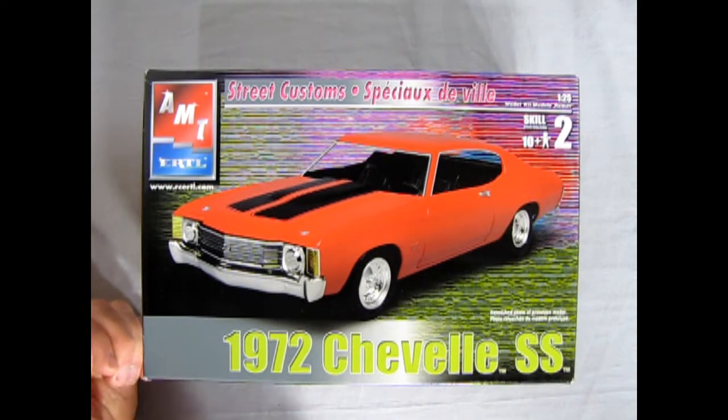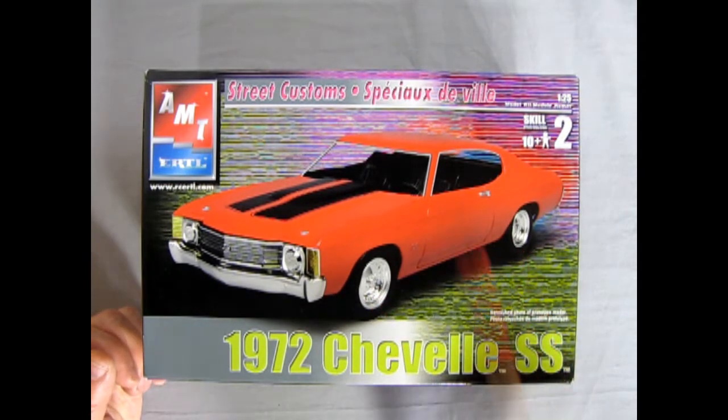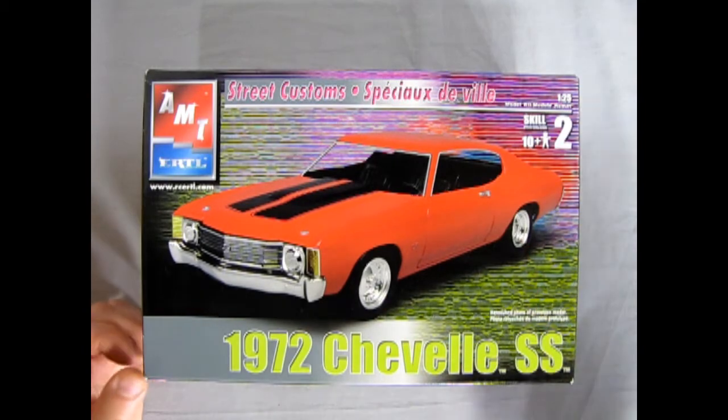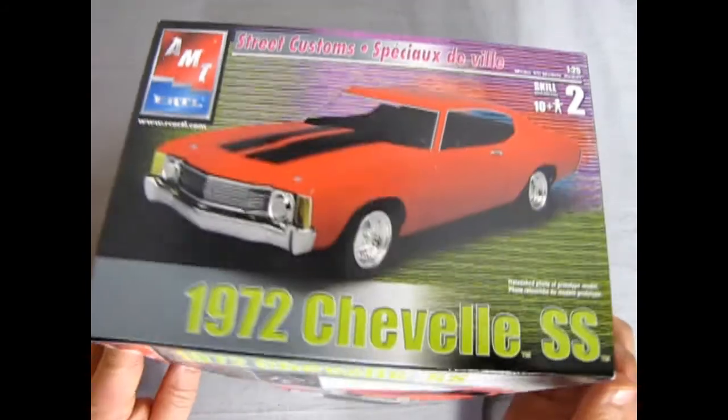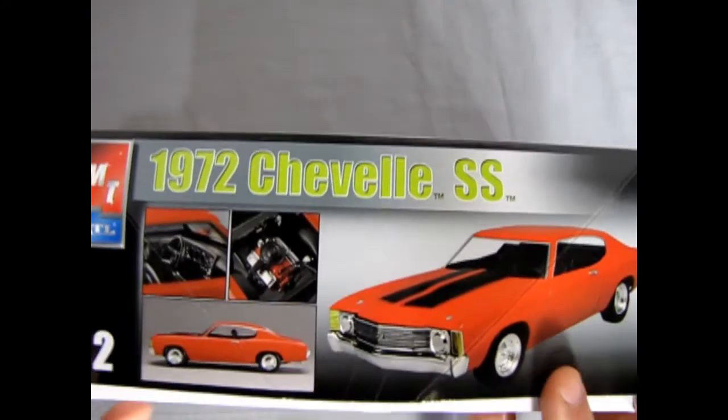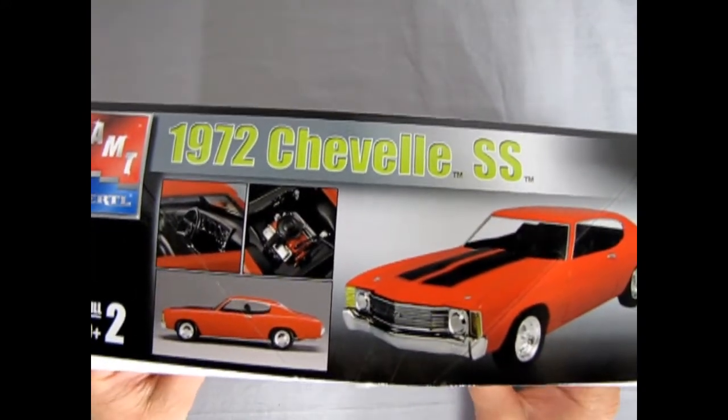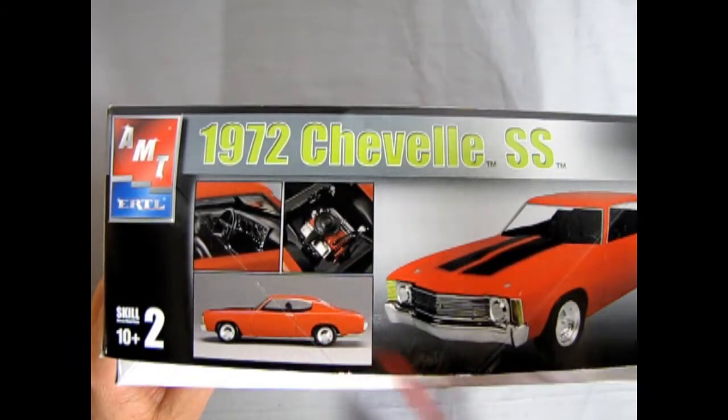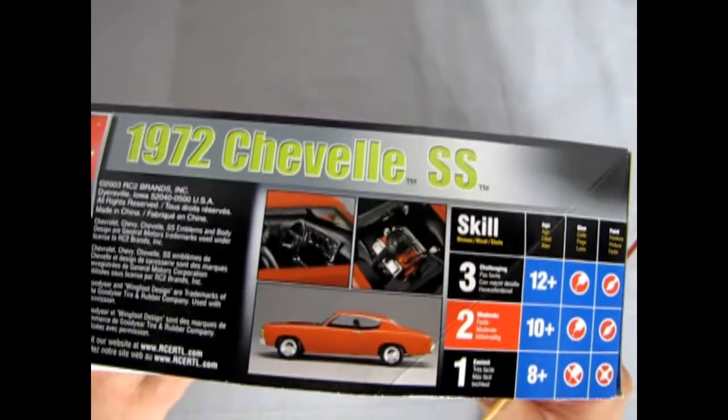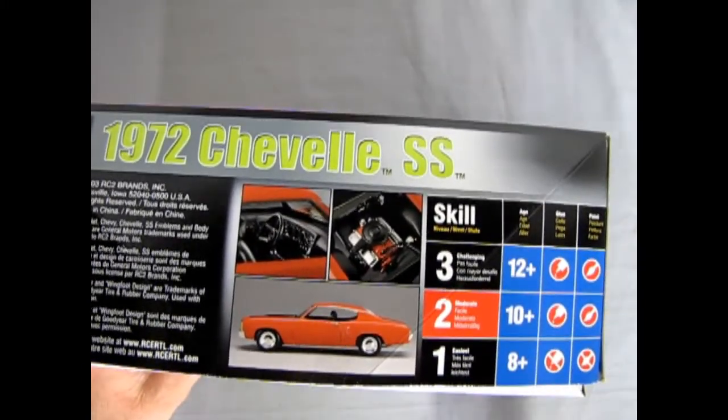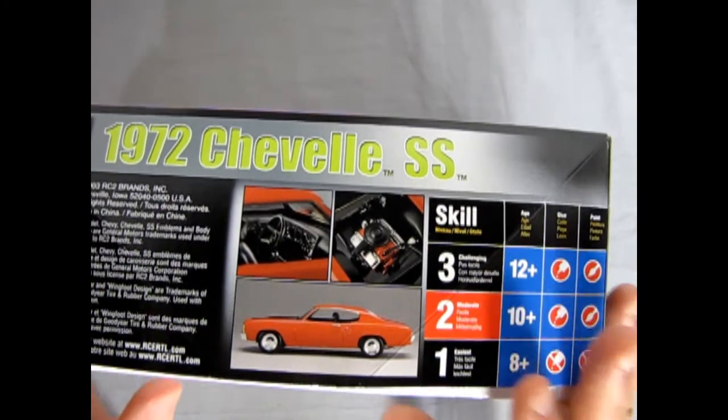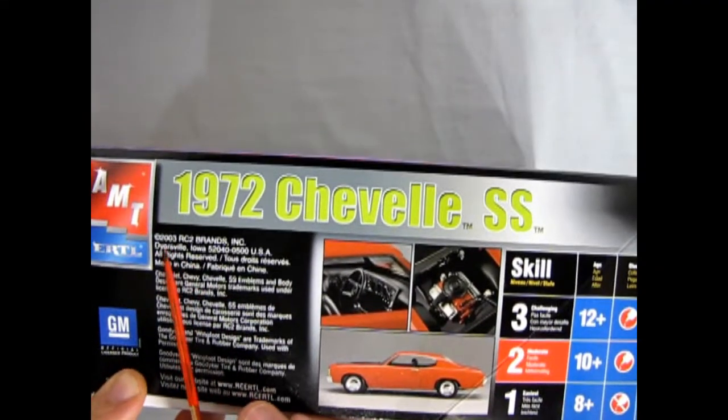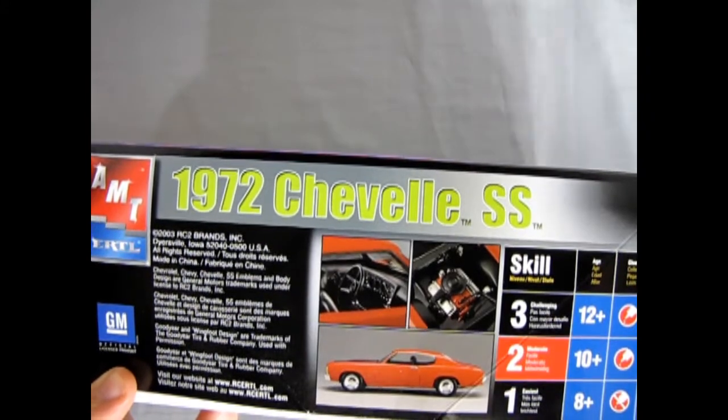And as we can see this model has some custom features on here with these old style mag wheels. This is an RC2 kit of course, so from a little while ago. As you can see there's a few pictures of the interior engine and side profile of the car as well as the 3 quarters that we saw in the front of the box. Side of the box mirrors that. This is a skill level 2 kit for ages 10 and up, requires glue and paint brush. And it came out in 2003 from RC2 Brands, so that's quite a while ago.